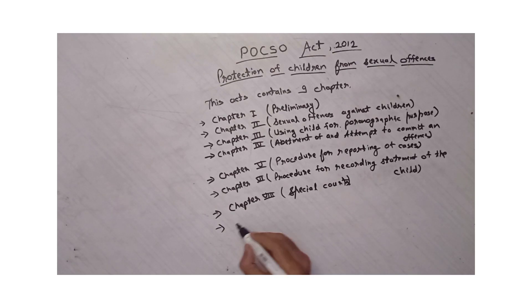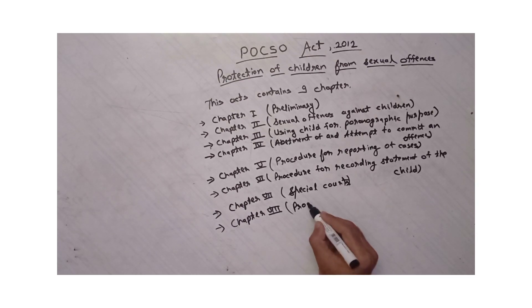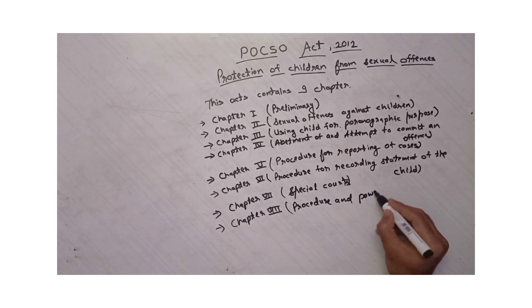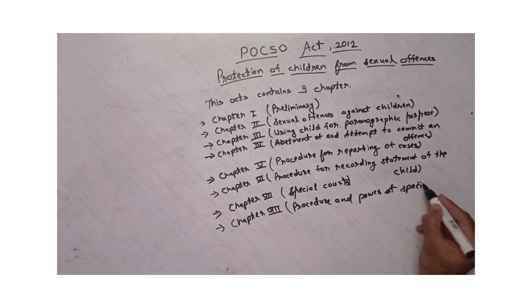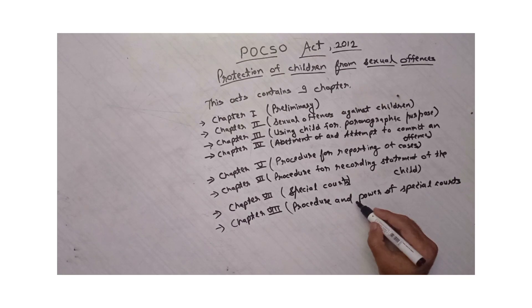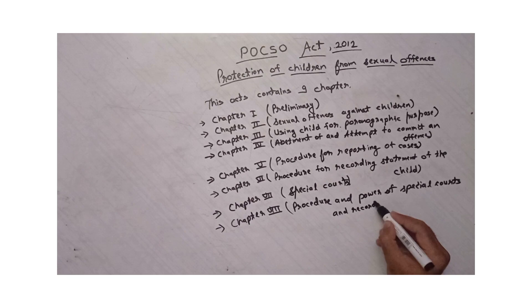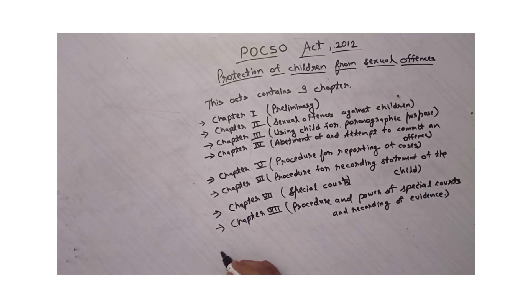Next one is Chapter number 8, which covers procedures and powers of special courts and recording of evidence. Next, Chapter 9 covers exceptions.